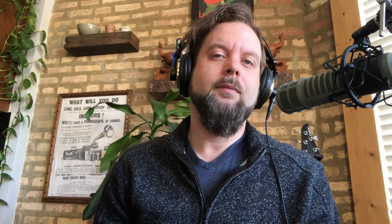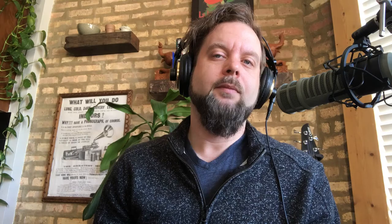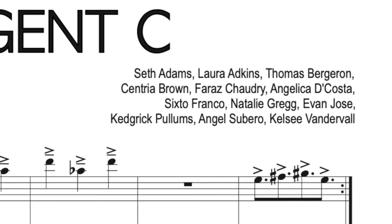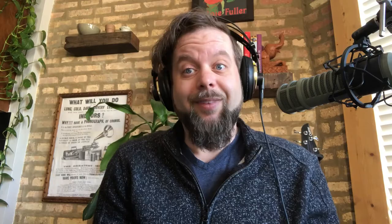Number two: don't compose your phrase until it's your turn. How do you know when it's your turn? I'll leave that up to you. What we did was go in alphabetical order by last name and composed the piece horizontally. This is one kind of temporal displacement — we aren't composing collaboratively exactly; sequentially might be a more accurate word. We're each writing one twelfth of the piece at different times, or temporarily displaced.